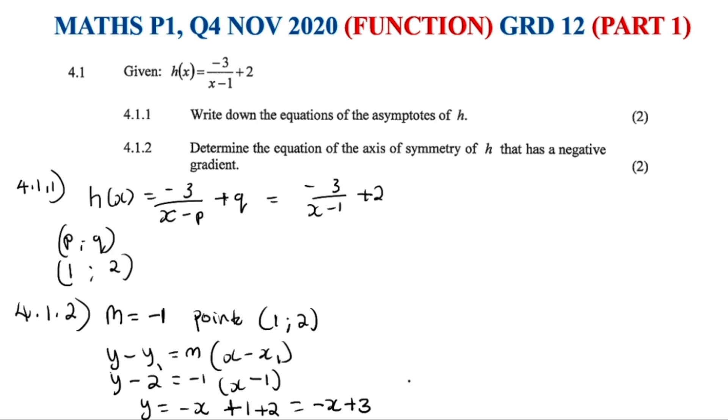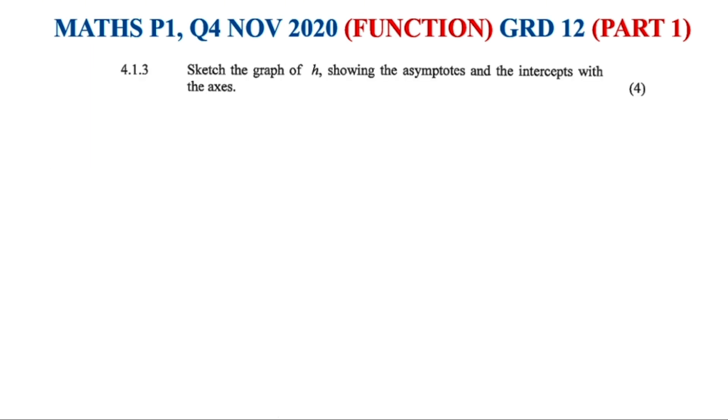So let's go ahead and do 4.1.3 on this part 1. When we come to 4.1.3, they are asking us to sketch the graph of h, showing the asymptotes and the intercept with the axes.